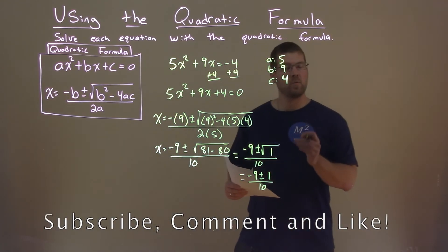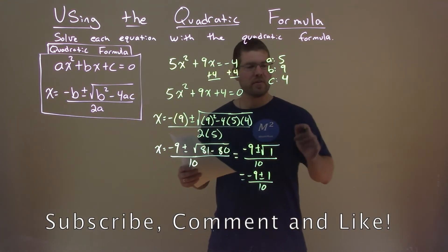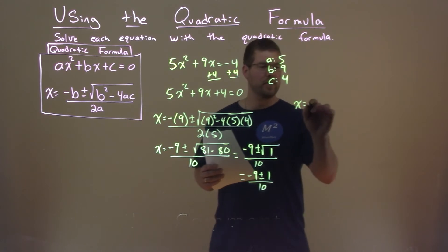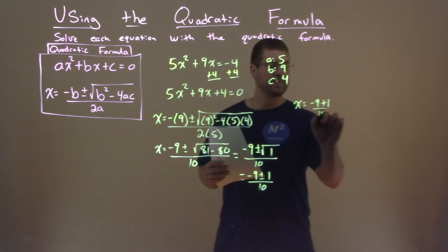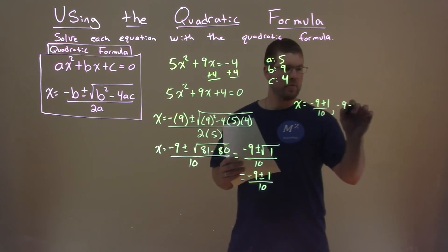So we have negative 9, plus or minus 1, over 10. Now we have to separate this with the plus or minus. So we have negative 9 plus 1 over 10, and negative 9 minus 1 over 10.